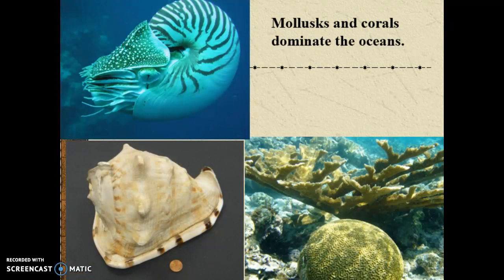This is happening on land and also in the oceans. This is when mollusks really start to dominate — snails, clams, oysters — those types of things. Corals also flourish during the Mesozoic. It's somewhat of a tropical environment in the oceans because of the continental plates and where they're positioned. Corals like warm, shallow, nutrient-poor water. The Great Barrier Reef in Australia and the Western Barrier Reef off Belize can trace their origin back to the Mesozoic — over 100 million years.